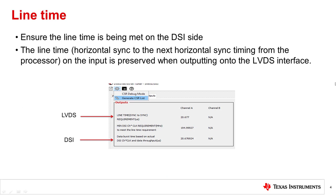Another point to check is to ensure that the line time is matched between the LVDS side and the DSI side. The line time is the time from one H-sync pulse to the next H-sync pulse and must be the same on the DSI side and the LVDS side, since these devices don't realign timing. If there's a line time mismatch, then it is very likely that you'll have issues.